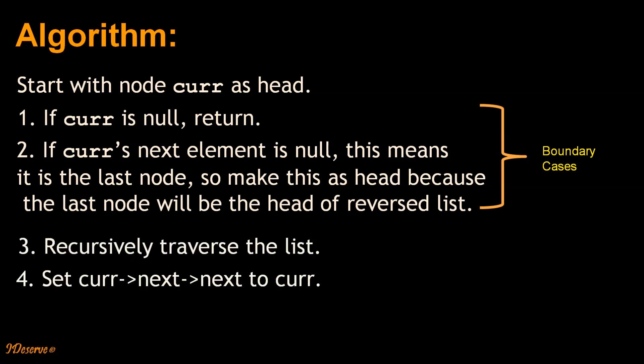So the first two cases are our boundary cases. Then we recursively traverse the list. We set current.next.next to current and then we set current.next to null. So steps 4 and 5 actually reverse the node pointers.